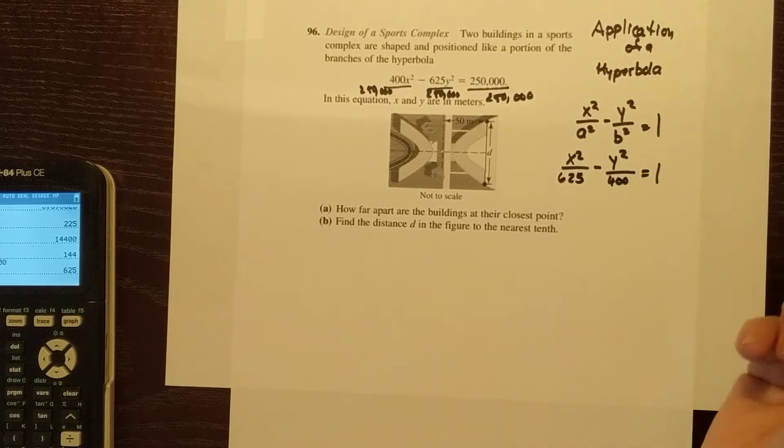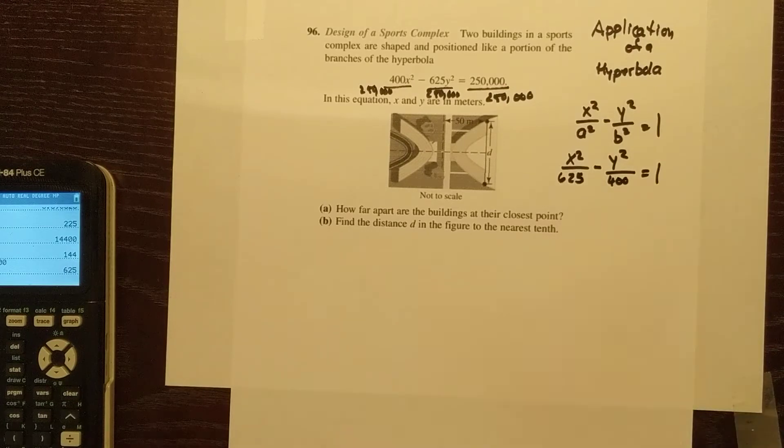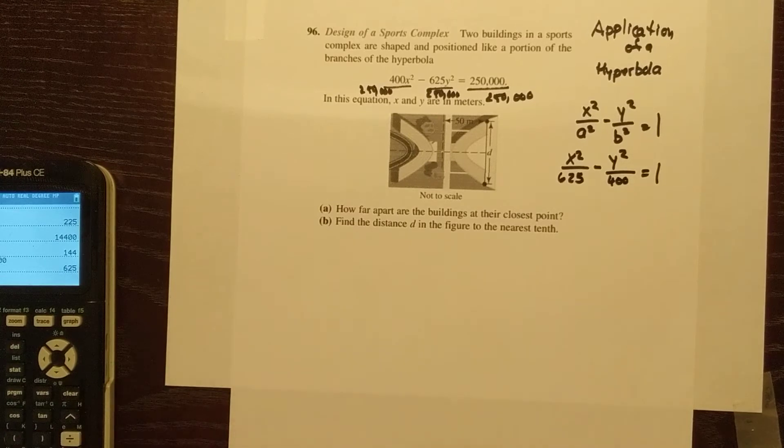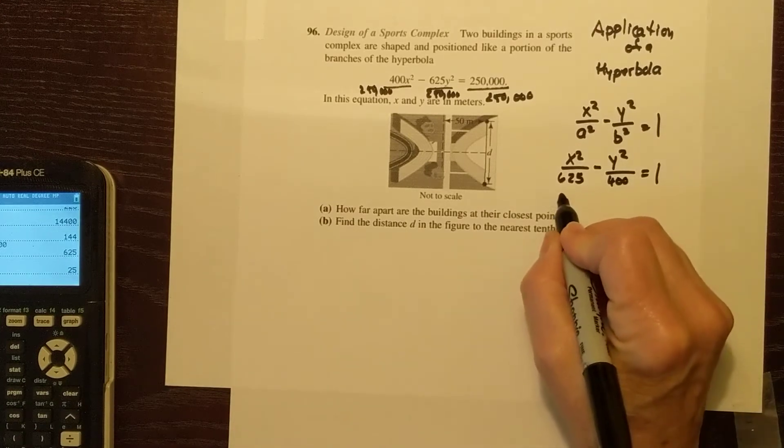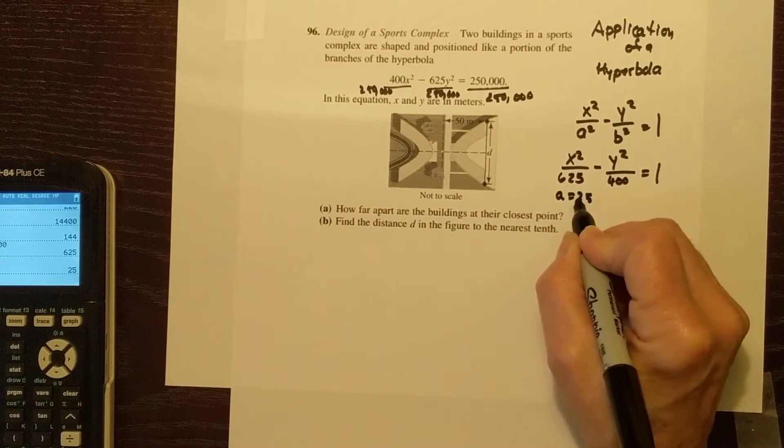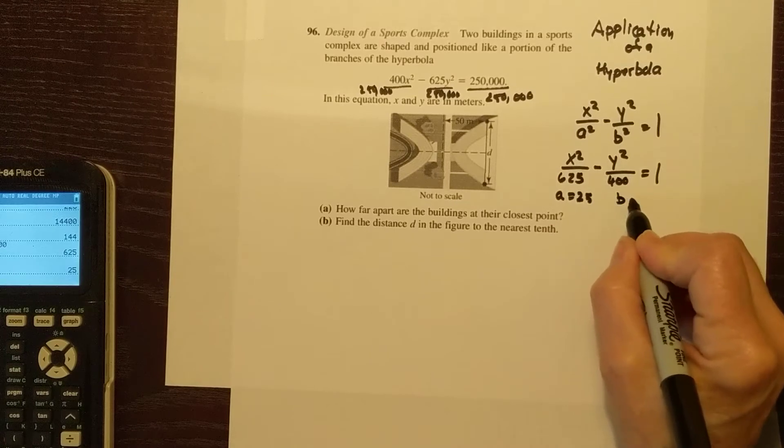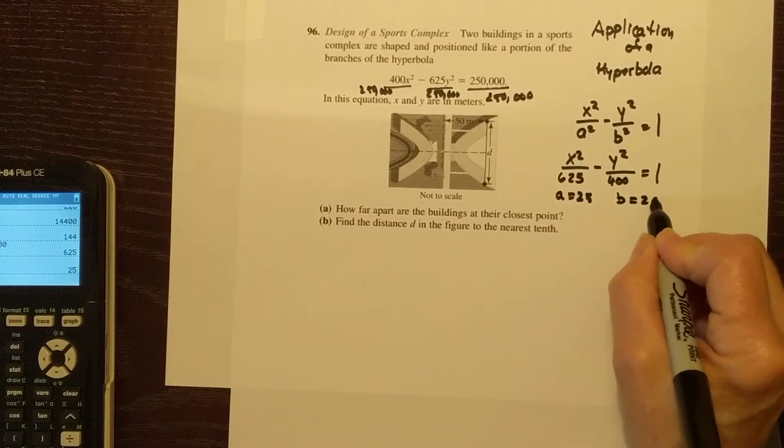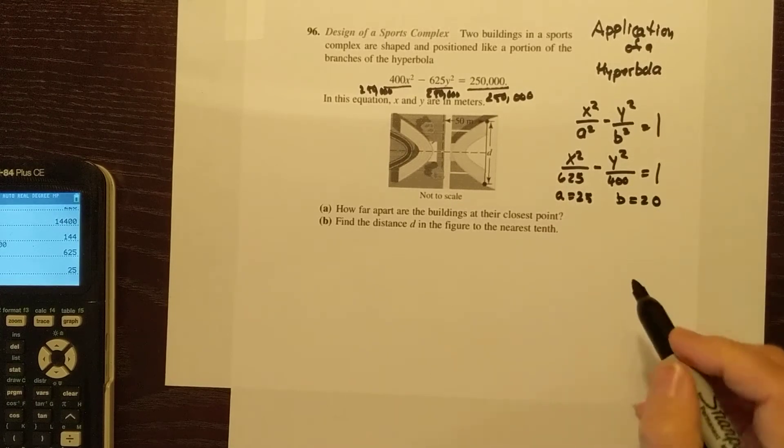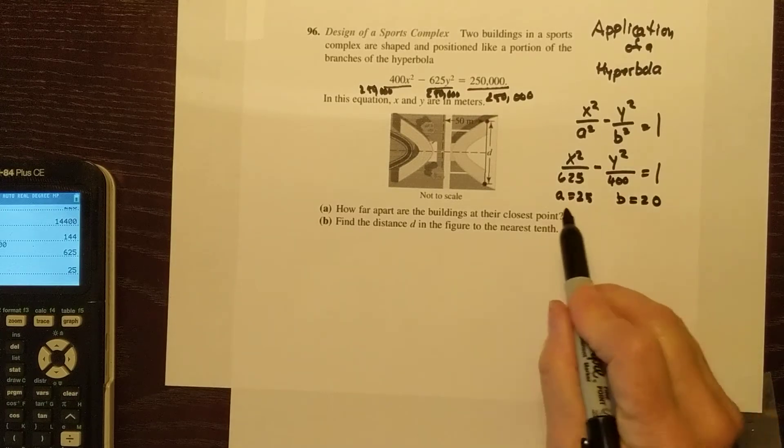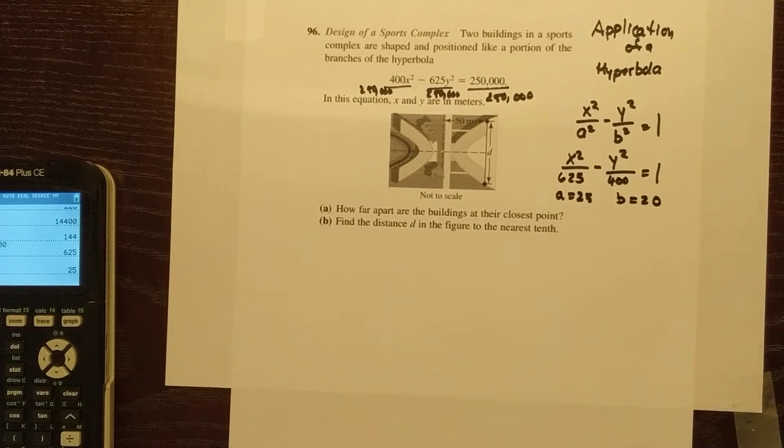Now this is in standard form and I can see that a is the square root of 625, which is 25, so I can say a is 25. I can say b is the square root of 400, which is 20. And so we know that is the vertical distance and the horizontal distance from the center.